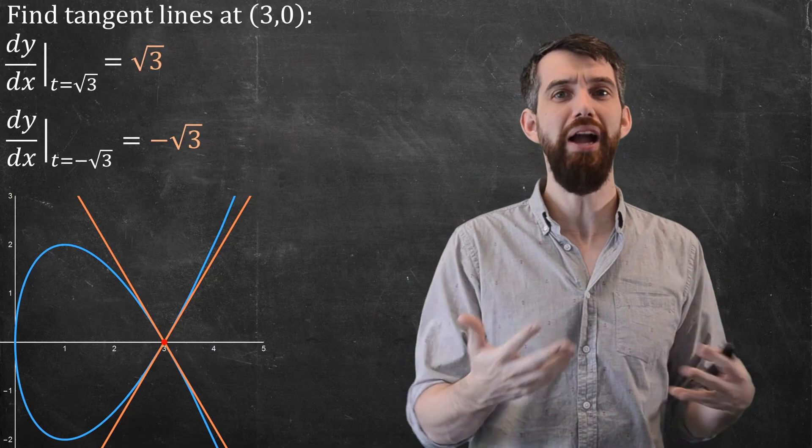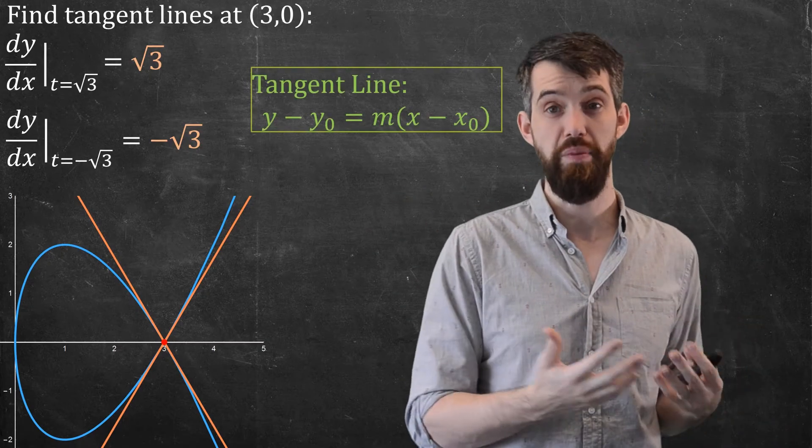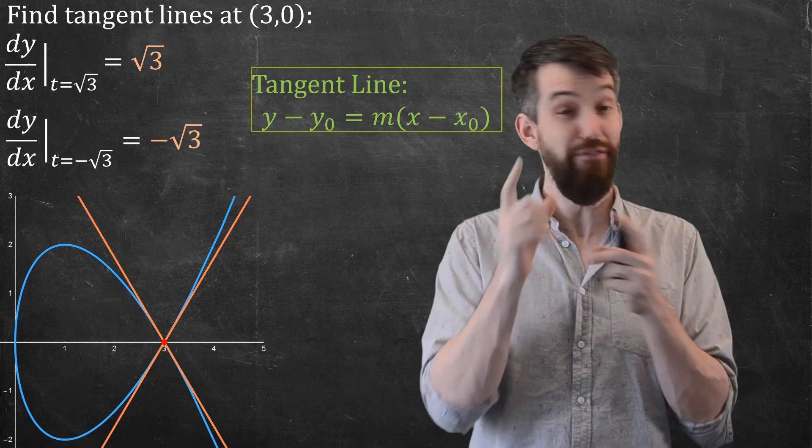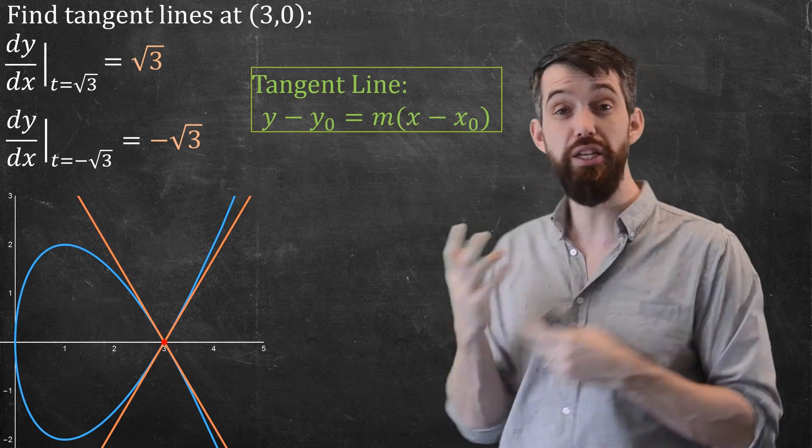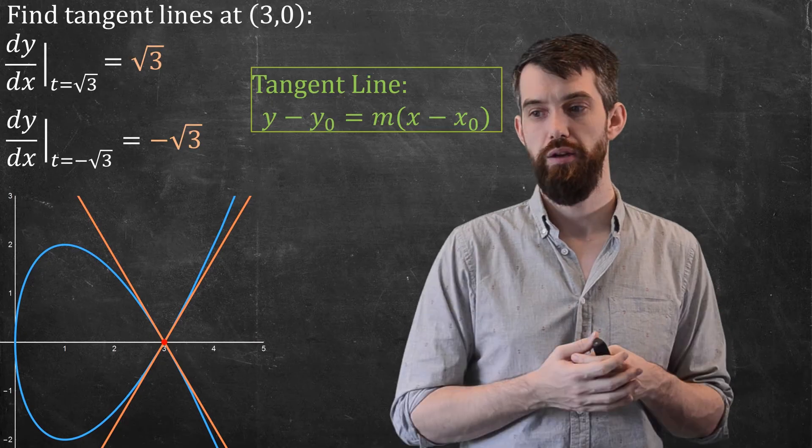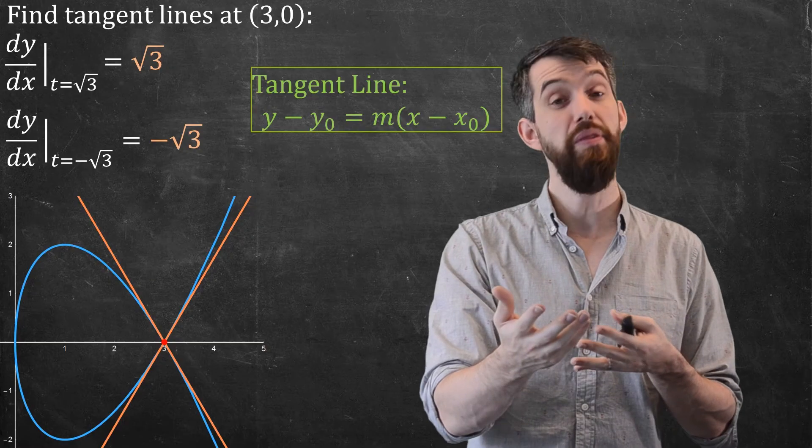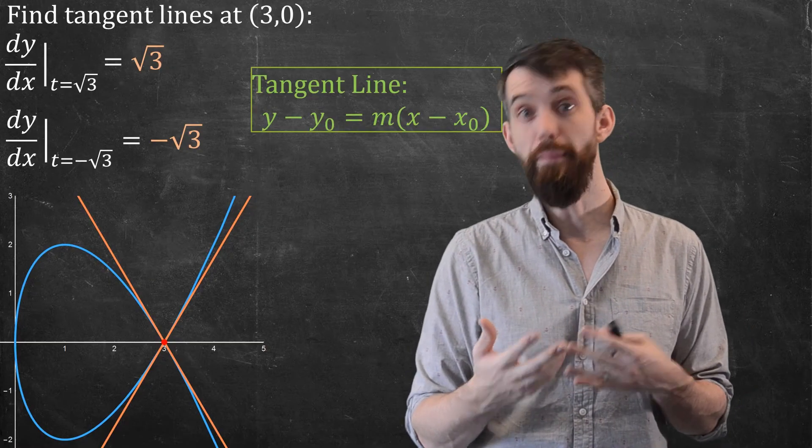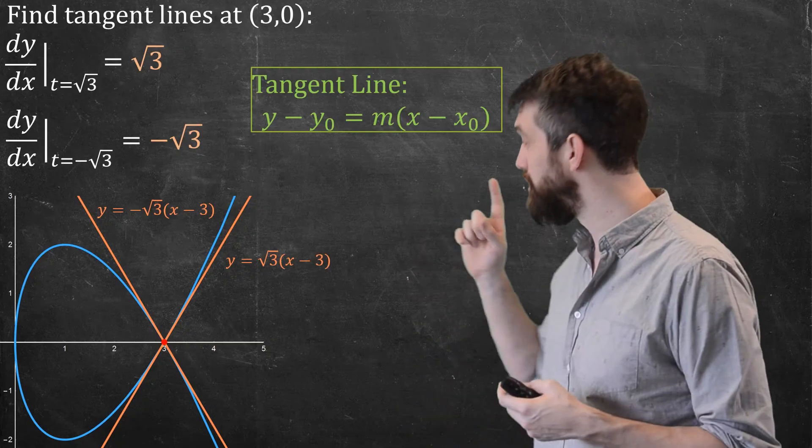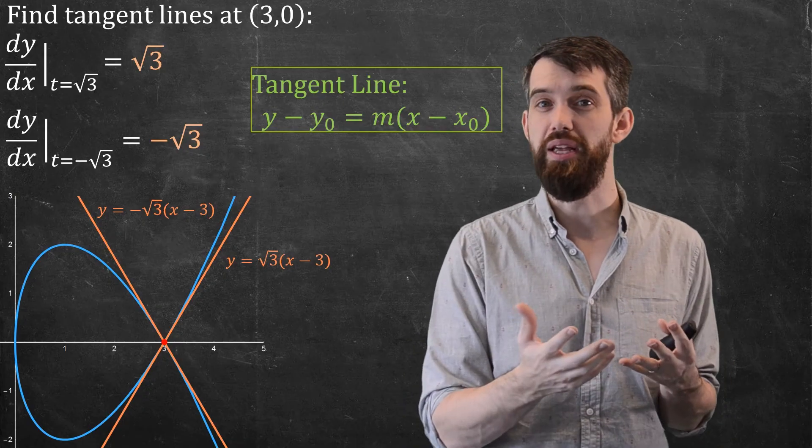So let me remind you that the equation of a tangent line is given by the point-slope formula. If I have a specific point (x₀, y₀) that's been chosen, then if I know what the slope m is, I can plug it into this y - y₀ = m(x - x₀) formula and that's going to give me the equation of a tangent line. So here the x₀ is 3 and the y₀ is 0, and then the m is either +√3 or -√3. So if I plug those into the formula, I get these two different equations, y = -√3(x - 3), and y = √3(x - 3).